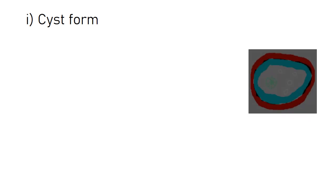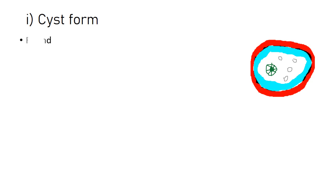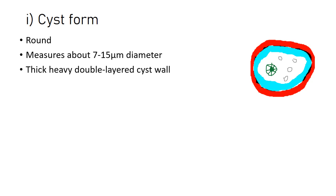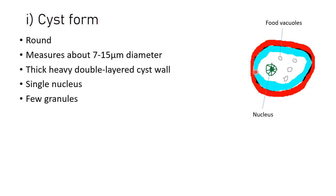The cyst form of Naegleria fowleri has a round structure measuring about 7 to 15 micrometers in diameter. It is made up of a heavy double-layered cyst wall and has a single nucleus. It also contains a few granules; in comparison to the trophozoite form, these food vacuoles appear empty in the cyst form.